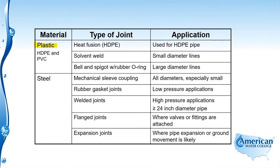Next is the plastic type of joint. When we talk about plastic pipe, we're talking about HDPE and PVC. For HDPE — high-density polyethylene — pipe, heat fusion is the type of joint used. For PVC pipe, solvent welds are used only on small diameter lines, and for larger diameter PVC pipe we use bell and spigot with rubber O-rings.